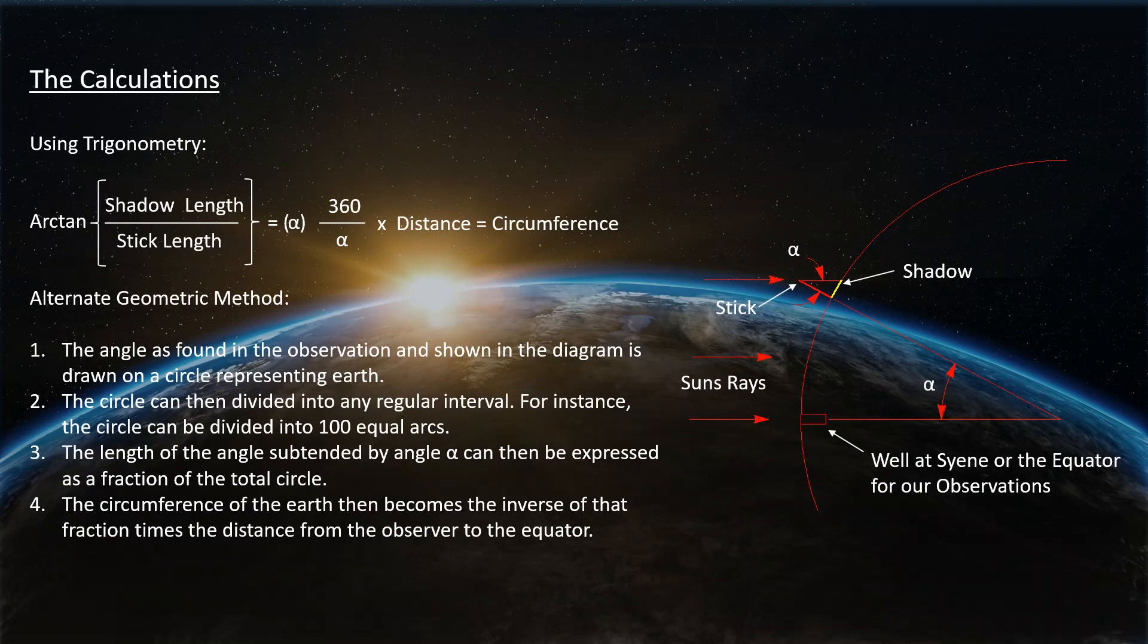So how do you do the calculations? It's really pretty simple. Using a trigonometric method, the arctangent of the shadow length divided by the stick length equals the angle alpha. And 360 degrees divided by alpha in degrees times the distance between the two points gives us the circumference. Not hard to do, but that would have been impossible for Eratosthenes to do because trigonometry hadn't been invented yet. But there's an alternate method, and I'm going to show you what that looks like right now.